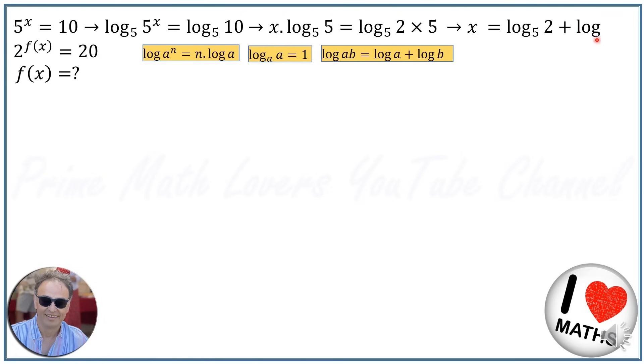And again, log₅(5) = 1, so we get x = log₅(2) + 1, or x - 1 = log₅(2).